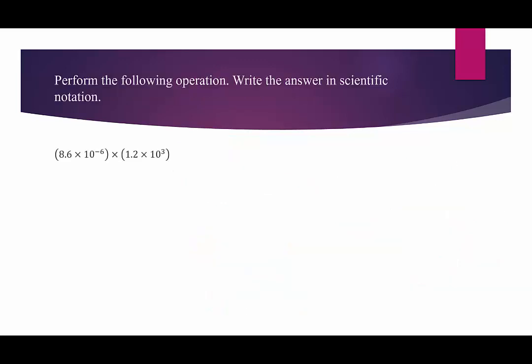Let's look at some examples. We want to perform the following operation and write the answer in scientific notation. This is all multiplication — the parentheses are strictly there for decorative purposes, just to say these are numbers in scientific notation. We're going to use the commutative property and group our decimals together: 8.6 times 1.2, and our powers of 10 together: 10 to the negative 6 times 10 to the third. 8.6 times 1.2 gives us 10.32.